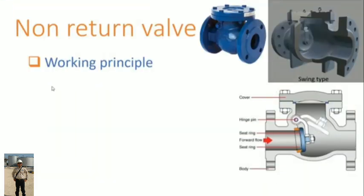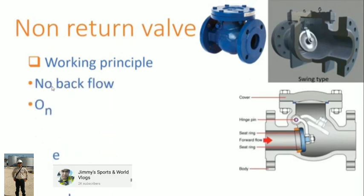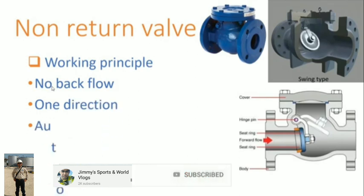Working principles of non-return valve, also known as check valve. The function of this type of valve is to prevent the back flow by a moving seating ring. They allow flow in only one direction. Usually these valves are essential after a pump. These valves work automatically, like during a power cut.